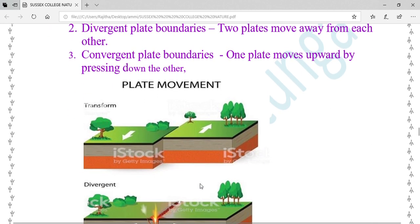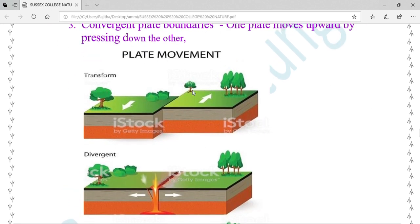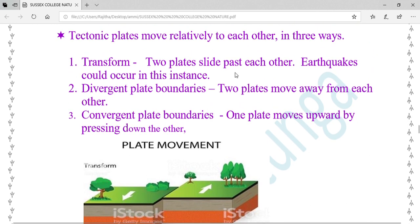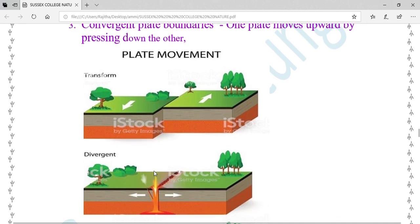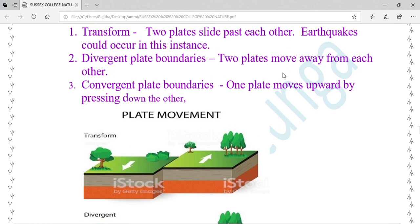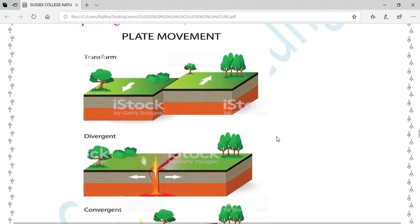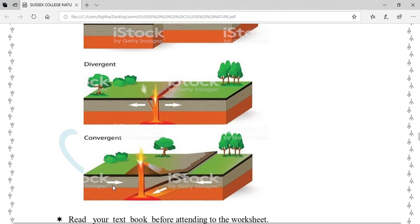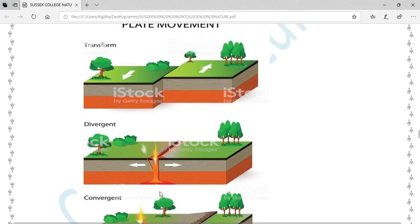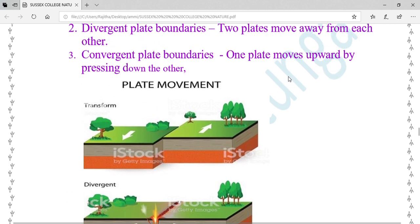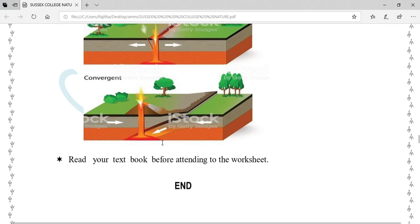Look at this picture: plate movement. Transform - see these two arrows. Two plates slide past each other, earthquakes could occur in this instance. Convergent plate boundaries - one plate moves upward by pressing down the other. Look at these two arrows. This one goes up, this one goes down.